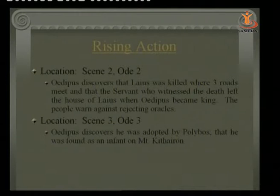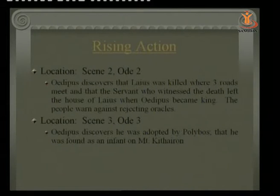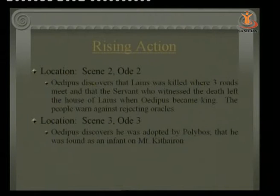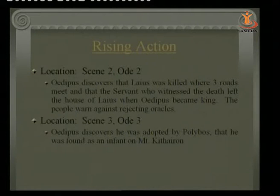Oedipus discovers he killed Laius at the place where three roads meet, and that the servant who witnessed the death left the house of Laius when Oedipus became king. Oedipus had killed all those present at the crossroads but left one man, who then came to Thebes. When that man realized Oedipus had become king by solving the Sphinx's riddle, he left Thebes immediately. The chorus had repeatedly warned against rejecting oracles, but neither the king nor queen believed, and finally this disaster prevailed.